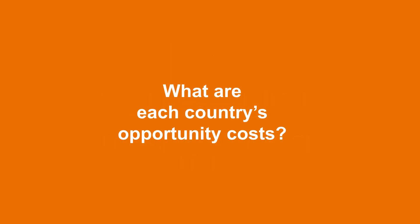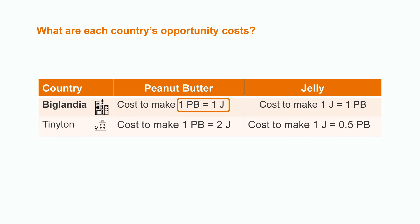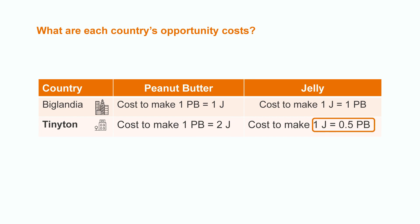All right, let's calculate opportunity costs for each country and what they should do to maximize trade. Biglandia's opportunity cost of creating one ton of peanut butter is one ton of jelly, whereas Tinyton's opportunity cost of creating one ton of peanut butter is two tons of jelly.